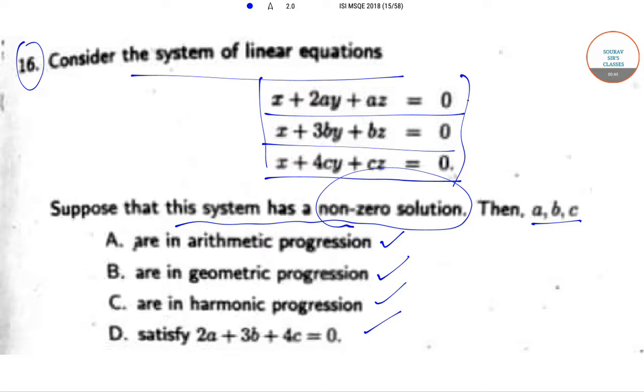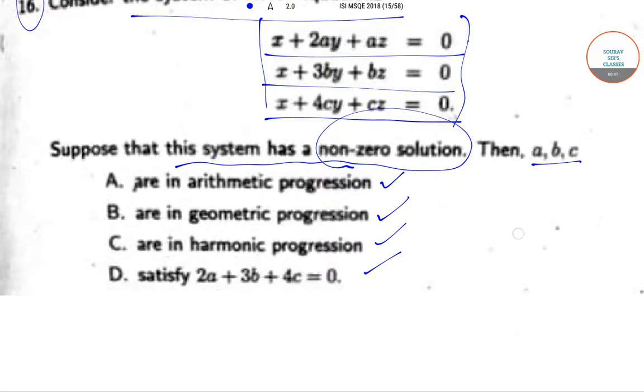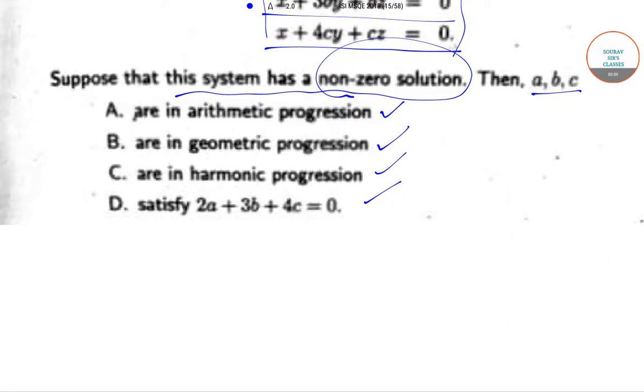So, this is what we are trying to solve. If we write the system of linear equations in matrix format, it can be written as the matrix [1, 2a, a; 1, 3b, b; 1, 4c, c] times the vector [x, y, z].